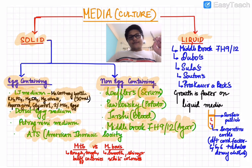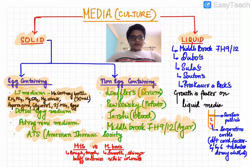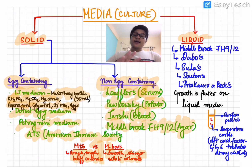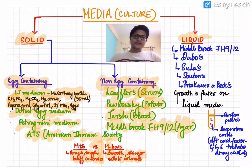With respect to culture, Mycobacterium tuberculosis gives rough, tough, and buff colonies, whereas Mycobacterium bovis gives smooth, shiny, and white colonies. You should go back to your textbooks and look up the complete list of differences between M. bovis and MTB, including chemical differences, culture differences, and microscopic appearance differences — all of which are important to memorize.